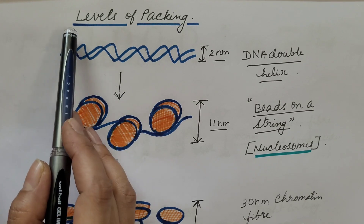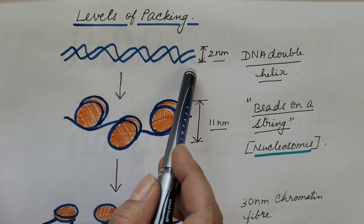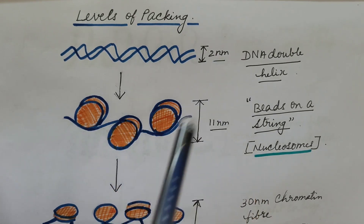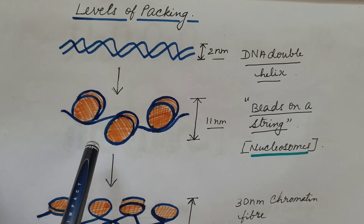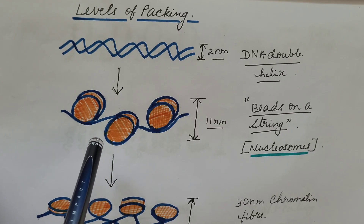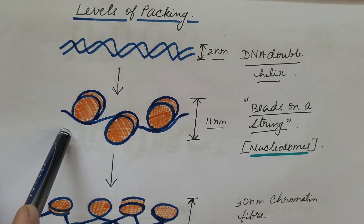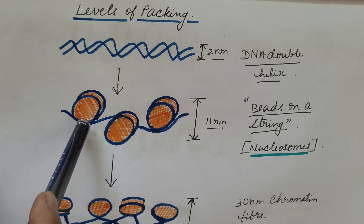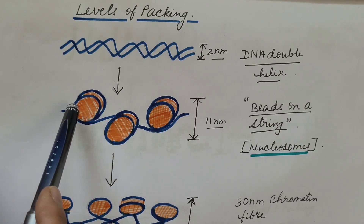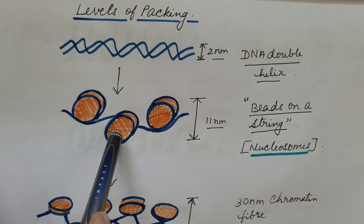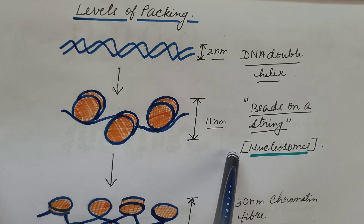Let us see the overview of the levels of packaging of DNA. The double helix of DNA has a width of 2 nanometers. In the next level, DNA is complexed with histones which form nucleosomes. Each nucleosome is an octamer of 4 different types of histones, and DNA is wrapped around these nucleosomes. H1 histone protein binds to the linker DNA — the DNA present between two nucleosomes. This type of chromatin appears as beads on a string and has a width of 11 nanometers.